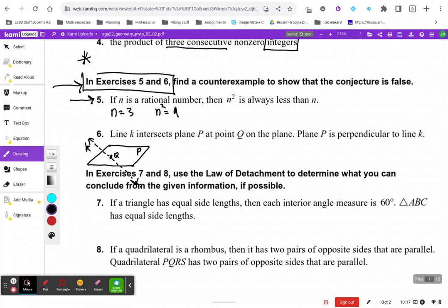Example 5: if n is a rational number, then n squared is always less than n. Here's a counterexample. Let's let n equal 3. Well, if n is 3, then we know that n squared, or 3 squared, is going to give you 9.